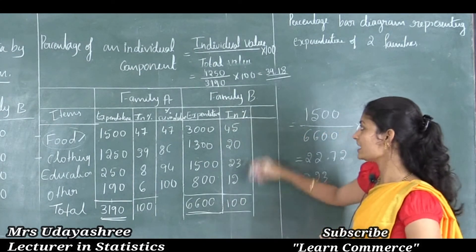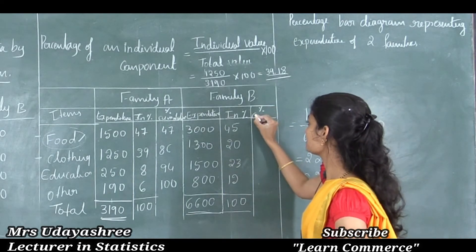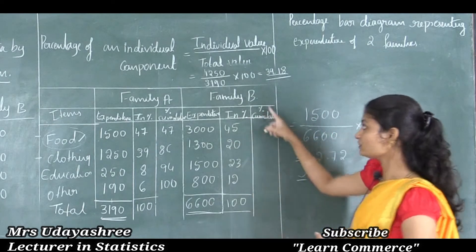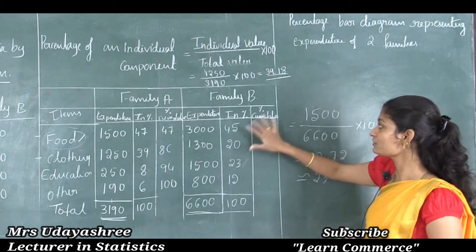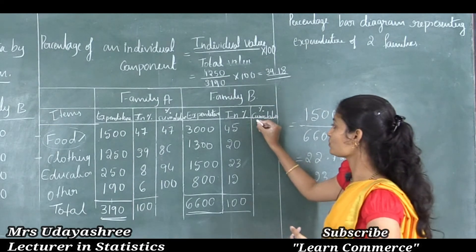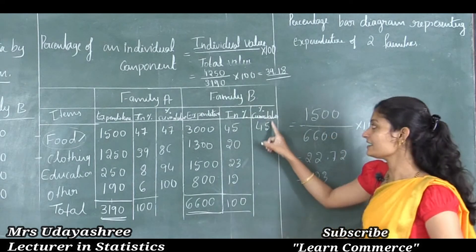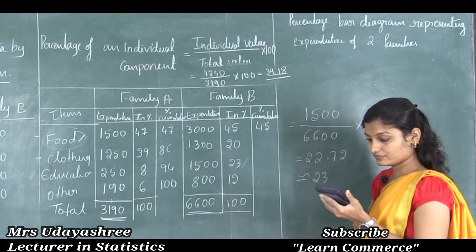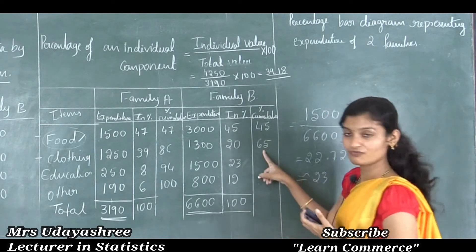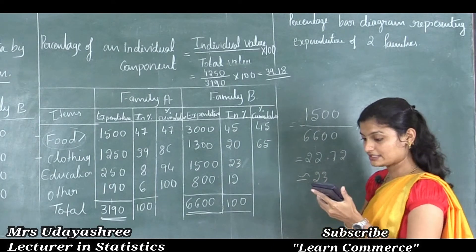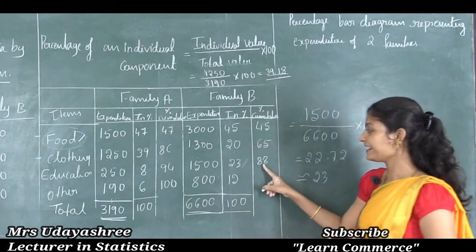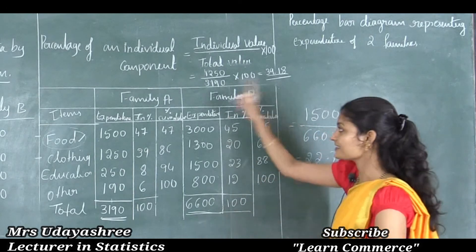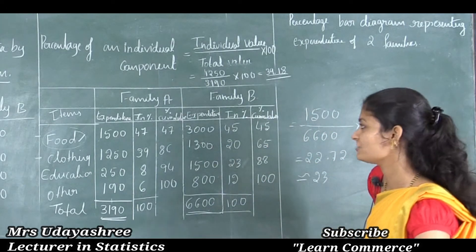Now I will convert family B percentages into cumulative percentages: 45, then 45 + 20 = 65, then 65 + 23 = 88, then 88 + 12 = 100. This is all about family A and family B expenditure in percentage. Now we can draw the percentage bar diagram.